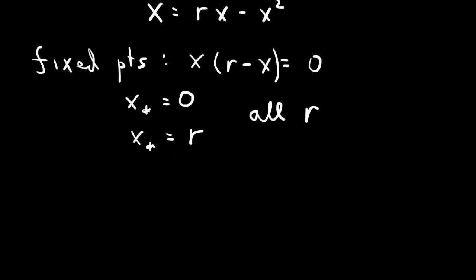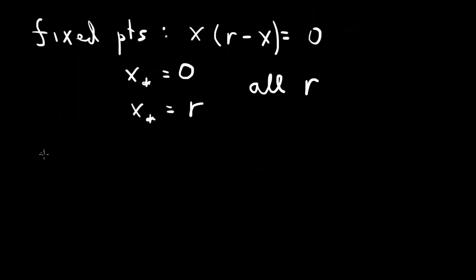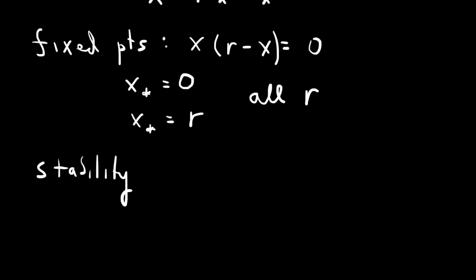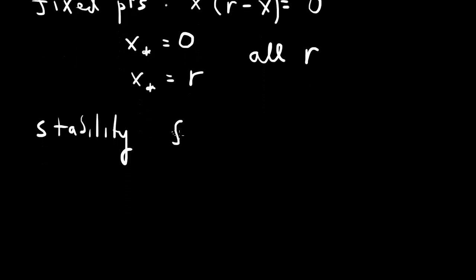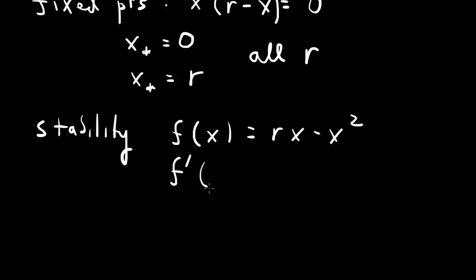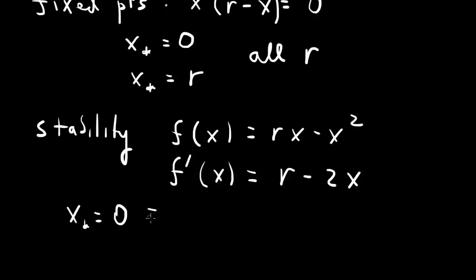Let's look at the stability of the fixed points. Our differential equation has f(x) equals rx minus x squared on the right-hand side. The stability depends on the derivative: f-prime of x equals r minus 2x. At the first fixed point, x-star equals zero, the derivative is equal to r.